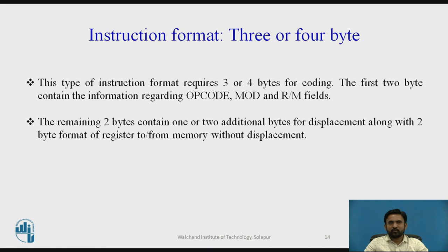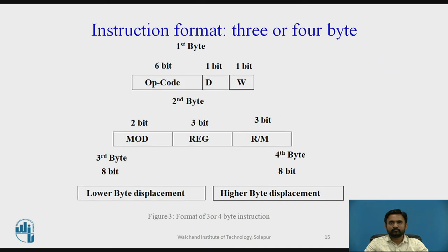The instruction format of 3 or 4 bytes: this type contains 1 or 2 additional bytes for displacement along with the 2-byte register-to-or-from-memory-without-displacement format. In figure 3, the instruction requires 3 or 4 bytes for coding. The first 2 bytes contain information regarding the opcode, MOD, and R/M fields, and the remaining bytes contain 1 or 2 additional bytes for displacement.